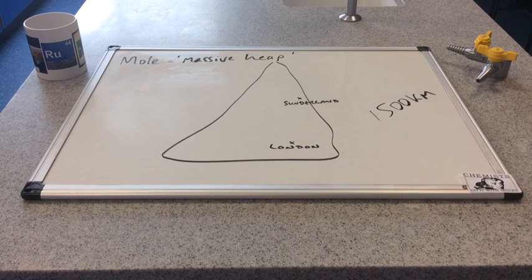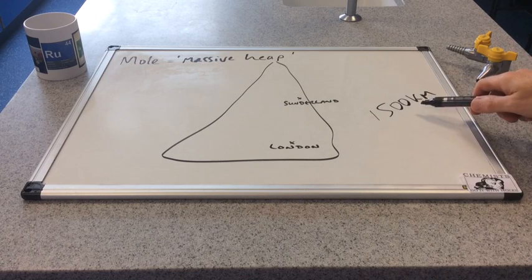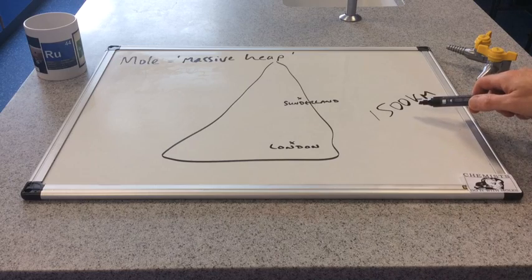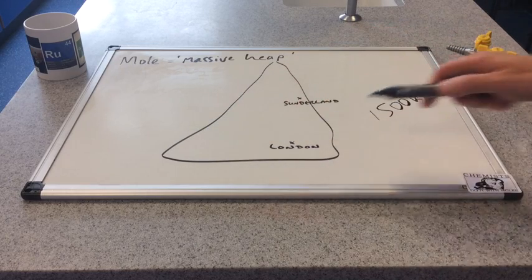Now that little fact links in nicely with the derivation of the word mole or the origin of the word mole. It actually comes from a Latin word which means massive heap. So obviously that would be a pretty big heap of sand, 1500 kilometres high, covering the entire British Isles.